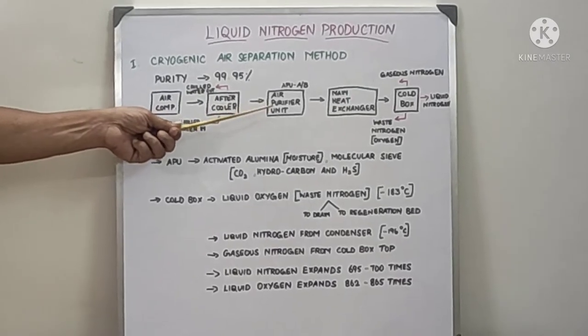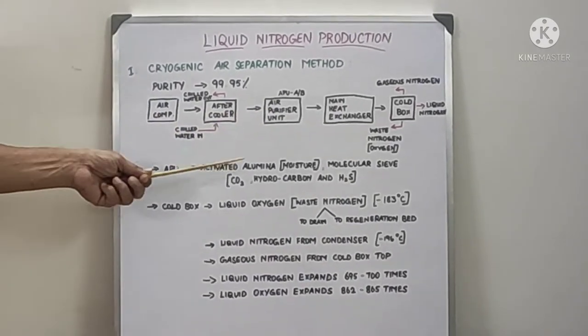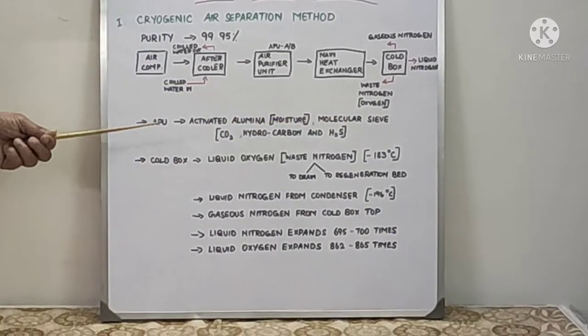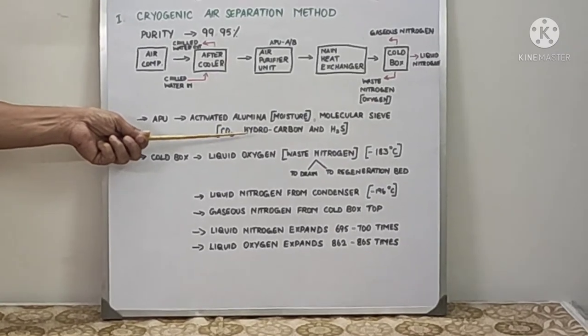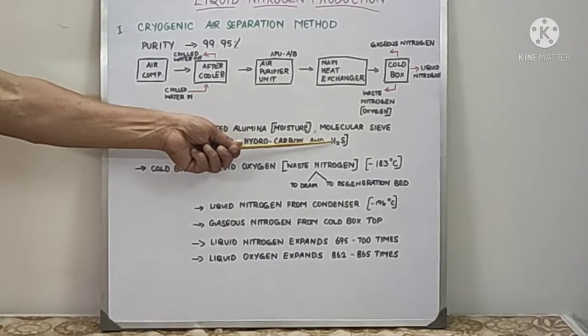Then it goes to the air purifier unit. The air purifier unit is filled with activated aluminum to remove further moisture and molecular sieve, which is used to remove carbon dioxide, heavy hydrocarbons, and hydrogen sulfide.